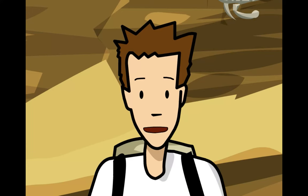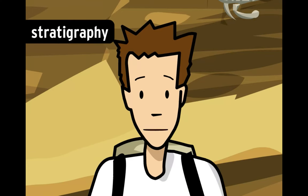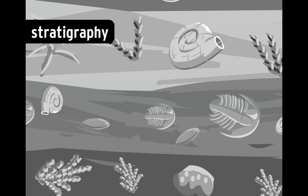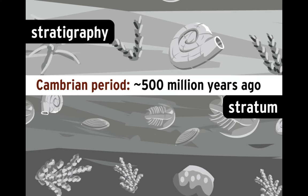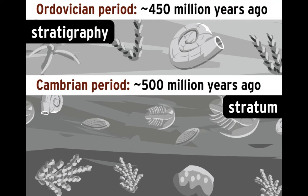The basis for the entire timeline is a branch of geology called stratigraphy — the study of rock layers and the fossils contained inside them. According to stratigraphy, a rock layer, or stratum, is probably older than the layers above it and younger than the layers below it.